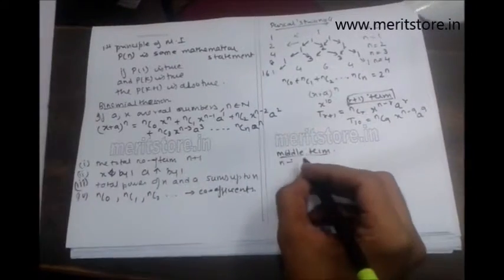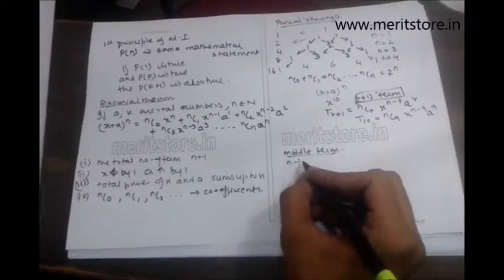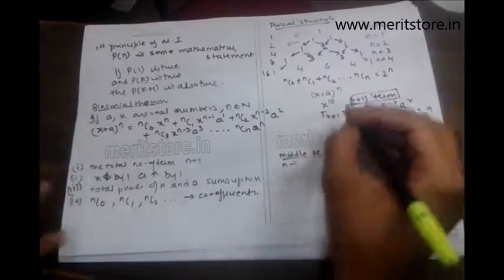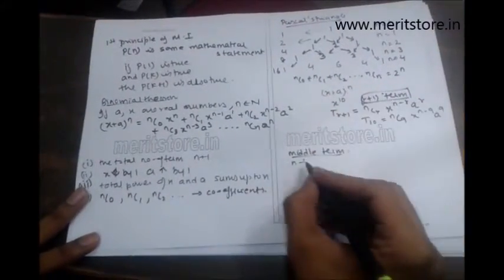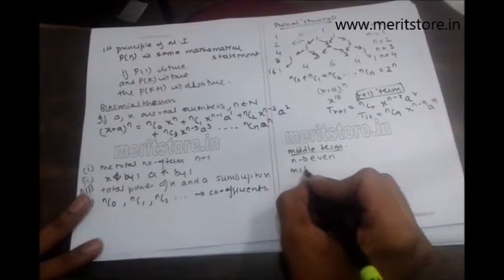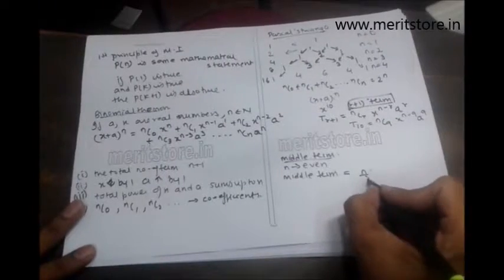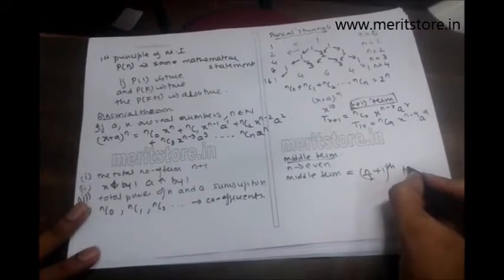You will also have a lot of questions which relate to middle term. Whenever you're asked to find the middle term, first look at what is the value of n. If n is even, then your middle term will be n by 2 plus 1 term.